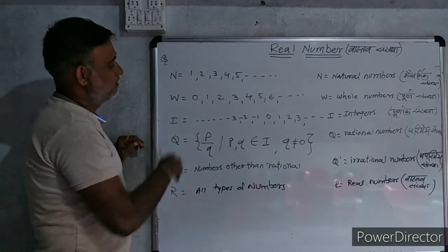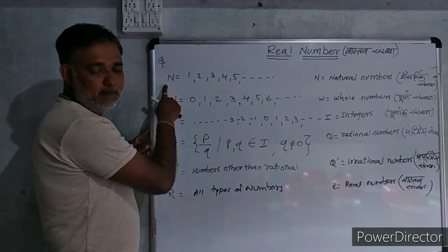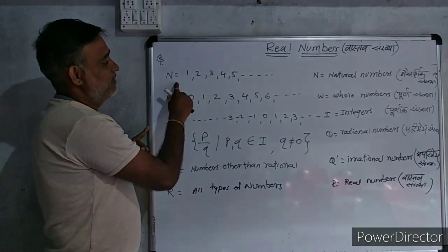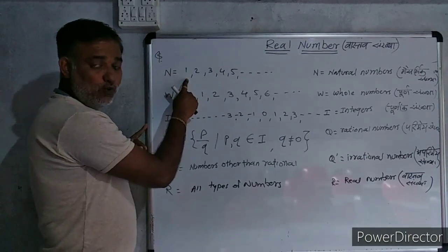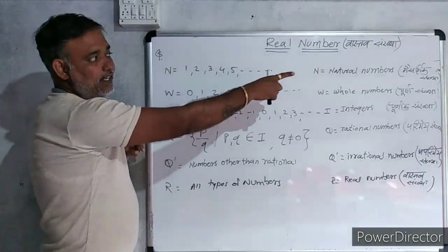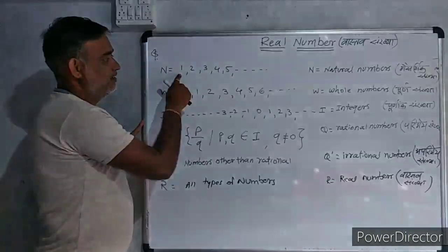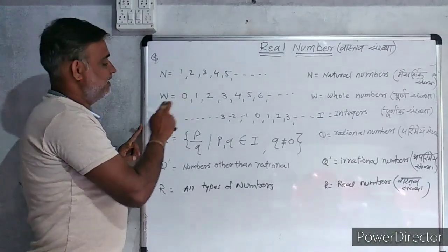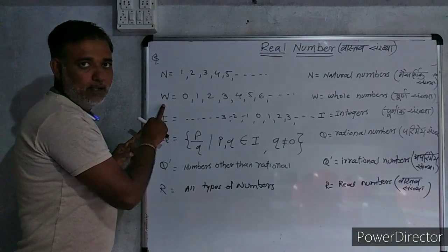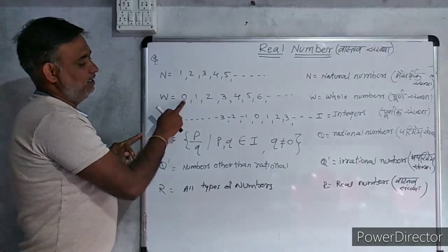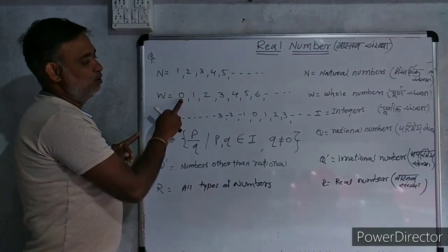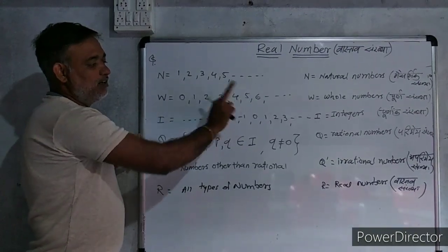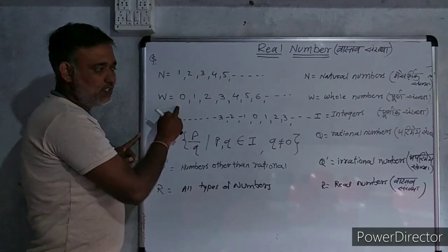I write here the types of numbers. The first is Natural Numbers. You can observe Natural Numbers start from positive 1 to infinity. The second type of number is whole number. They start from 0 to infinity, all are positive and they start from 0.